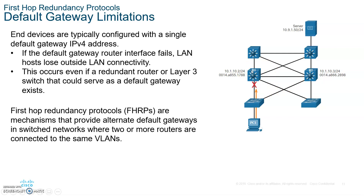Here's the definition to write down: FHRP stands for First Hop Redundancy Protocol and is used to allow redundant default gateways in a LAN. Number one: a virtual router is multiple routers working together as if they were one router by sharing the same IP and MAC address.